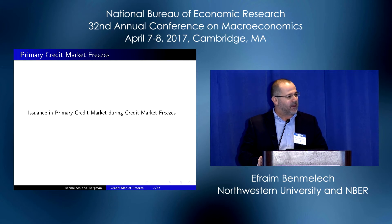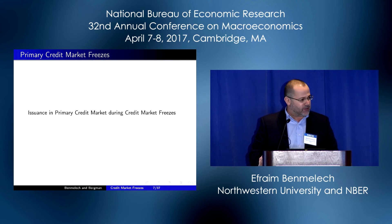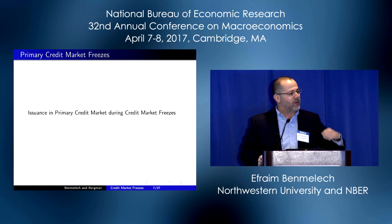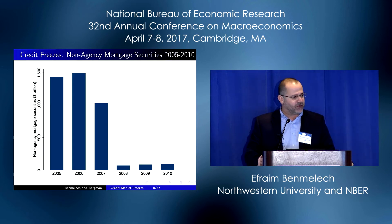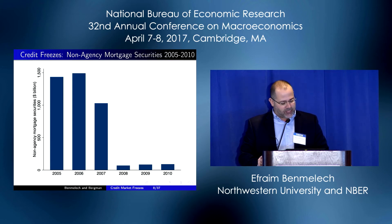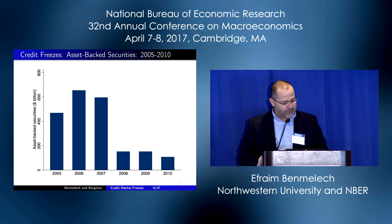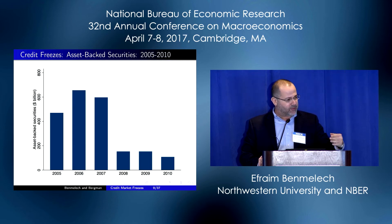So this is what we do, and this is what we take into the data. But before we move to a thorough analysis of secondary market liquidity, we want to show you some evidence on credit market freezes throughout history. Here I'm going to refer to the primary market, or cases in which issuance of securities seems to dry up. You probably have seen a version of this before — this is issuance of non-agency mortgage-backed securities, or private-label mortgage-backed securities. This is a market that was very active before the crisis, and then it stops. It's not only the mortgage-backed securities market that stops; asset-backed securities that are not directly related to the mortgage market stopped as well.